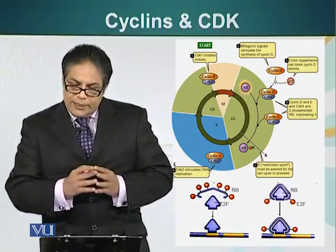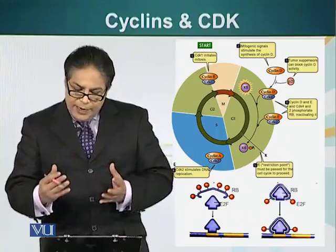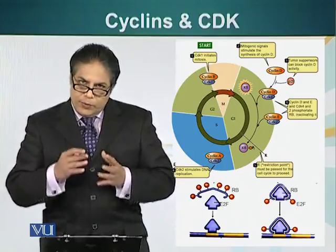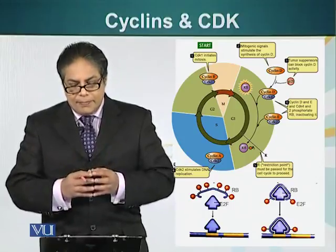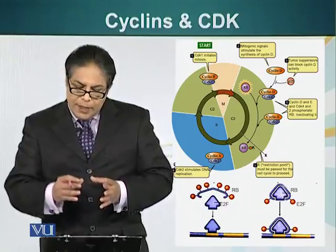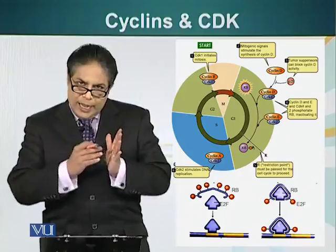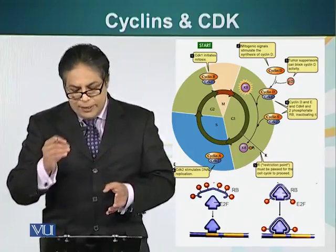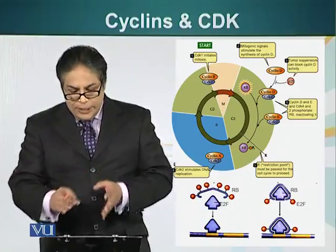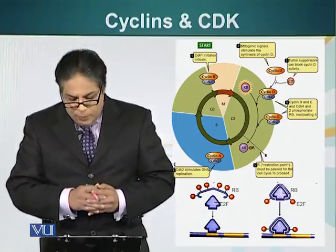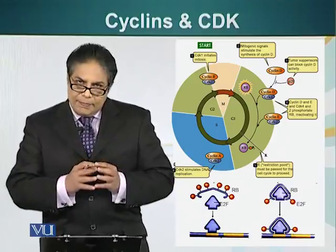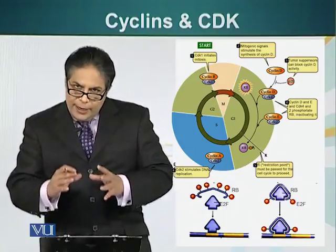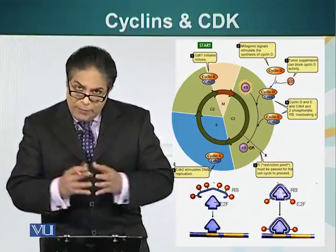When the cell receives this signal in G1 phase, cyclin D and cyclin E are made. These two cyclins interact with CDK4 and CDK2 respectively, thereby activating them. These two cyclins are allosteric regulators — they attach to these enzymes at a specific location and cause a conformational change which allows the enzymes to phosphorylate different target proteins. One of the target proteins for these enzymes is the RB protein, retinoblastoma protein, which is a negative regulator for DNA synthesis.